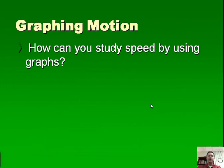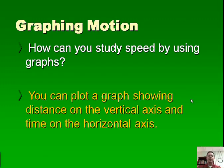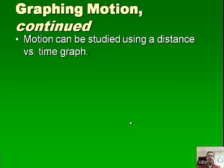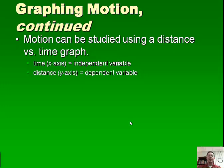So how can we study speed by using graphs? You can plot a graph showing distance on a vertical axis and time on the horizontal axis. Again, vertical is the up and down. Horizontal is the left and right, so we think about the horizon. We're going to study motion by using a distance versus time graph. Time, again, is on the x-axis. We also say this is the independent variable. Distance is on the y-axis. This is the dependent variable and it depends on what time is doing.